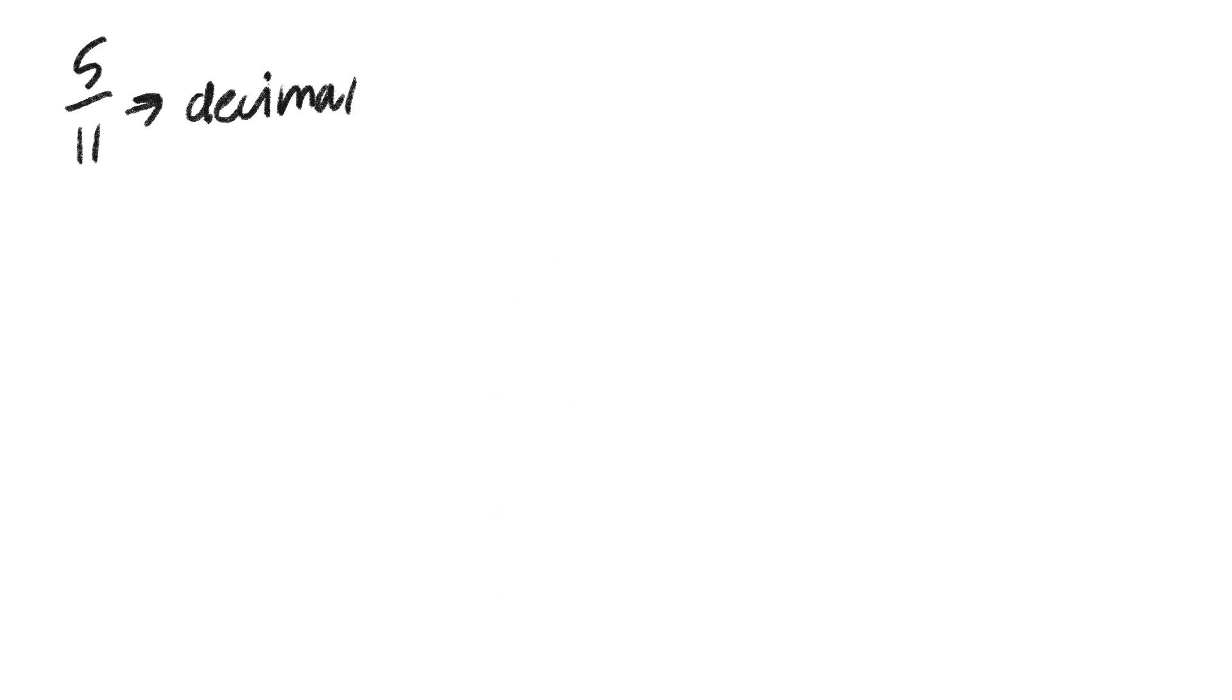This also works with repeating decimals, as long as you keep a lookout for patterns with the remainders. If we have 5/11, we expand this to 5.00. 11 fits into 50 four times. After we subtract 44, we get 6 and bring an extra zero down to get 60. 11 fits into 60 five times, so we mark that up here and subtract 55 from 60 to get 5.